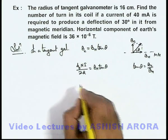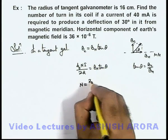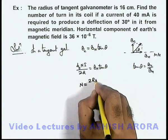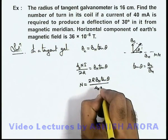Rearranging these terms, we can directly get the number of turns in the coil of the tangent galvanometer, which is given as N = 2R Bh tan θ / μ₀I.